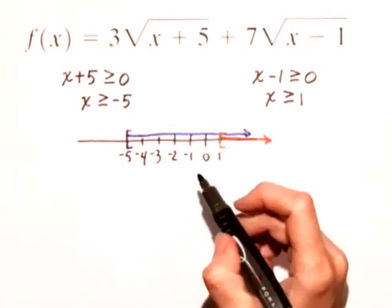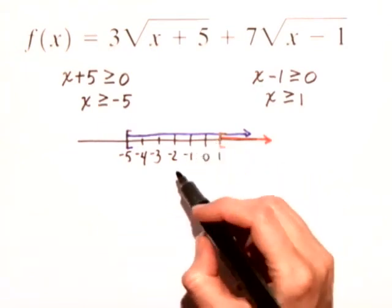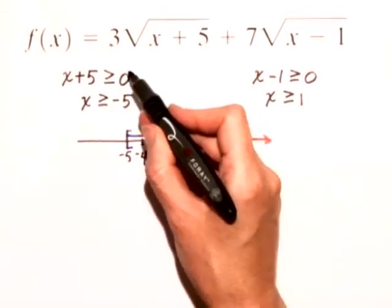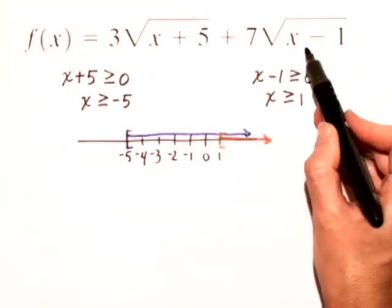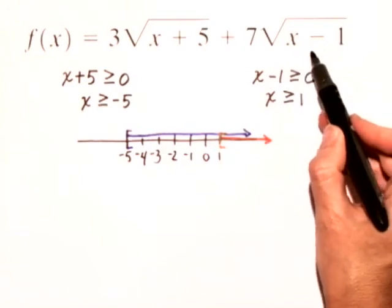In other words, I can't choose a number to the left of 1 on the number line. For example, what if I wanted to include 0 in my domain? If I substitute 0 for x in the second radical, I'd get 0 - 1 = -1 underneath the radical, and that's not a real number.